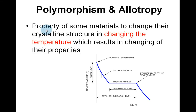Polymorphism and allotropy are whereby some materials change their crystalline structure with changing temperature, which results in changing of their properties.